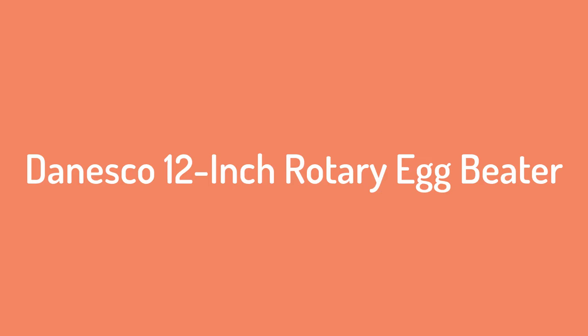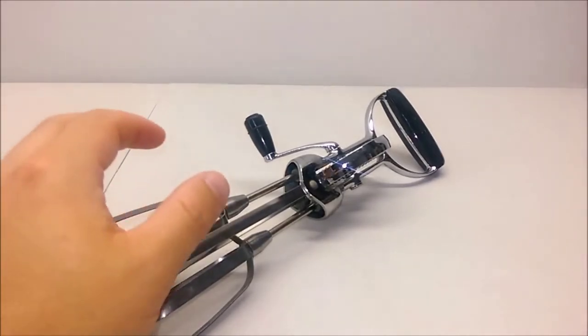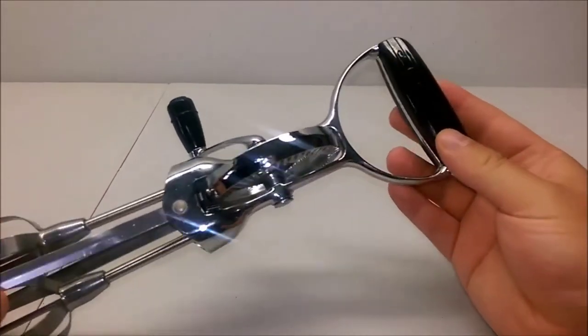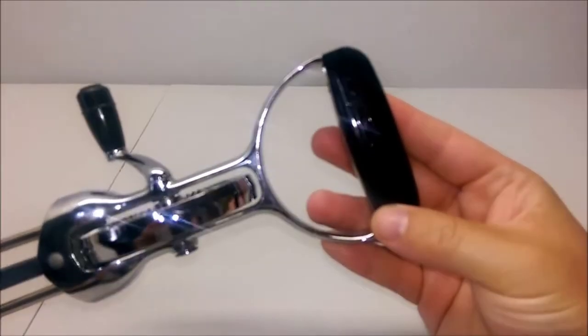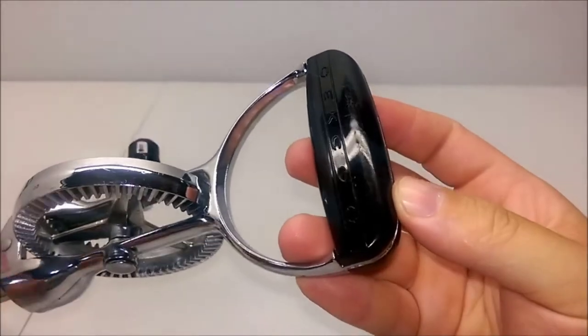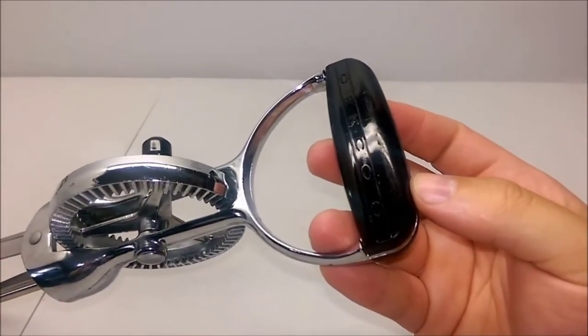Number 3, Dinesco 12-inch Rotary Egg Beater. The Dinesco 12-inch Rotary Egg Beater is the perfect equipment that can be used not only for beating eggs, but also for blending batters, sauces, salad dressings and whipping cream.